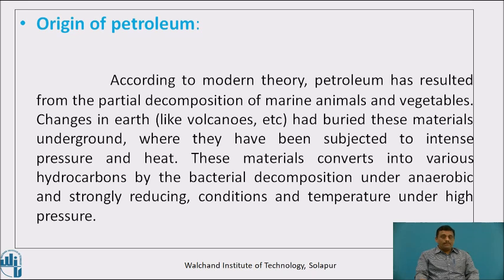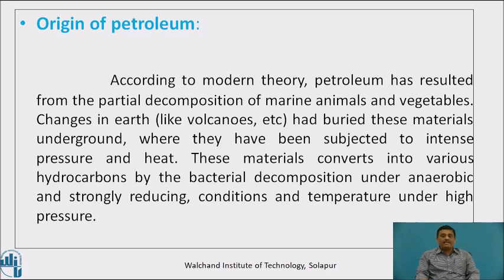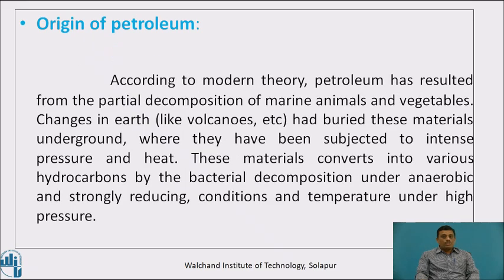What is the origin of petroleum? According to the modern theory, petroleum has resulted from the partial decomposition of animals and vegetables, that is organic bodies. Because of changes in the earth, these organic bodies get buried inside the earth's crust, where they remain for several years in the presence of moisture, chemical elements, and pressure. Under such conditions, all these organic bodies slowly get converted into various hydrocarbons by bacterial decomposition under anaerobic and strongly reducing conditions.